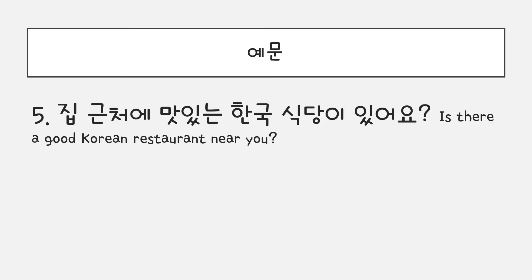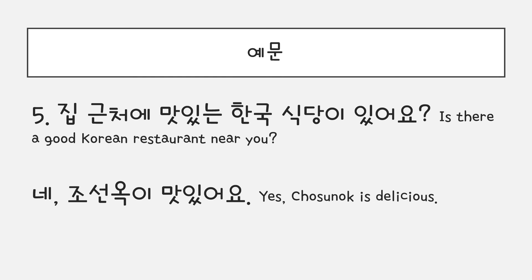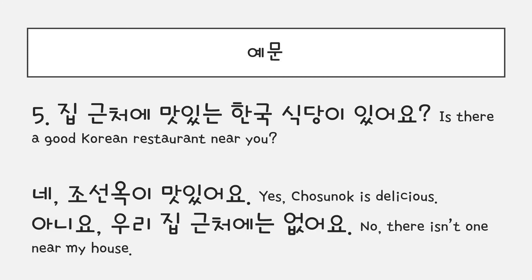For question number five: 집 근처에 맛있는 한국 식당이 있어요? You can say 네, 조선옥이 맛있어요. You can also say 아니요, 우리 집 근처에는 없어요.